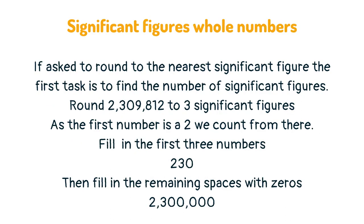If asked to round to the nearest significant figure, the first task is to find the number of significant figures. Round 2,309,812 to 3 significant figures. The first number is a 2, we count from there. Fill in the first three numbers 230, then fill in the remaining spaces with zeros: 2,300,000.